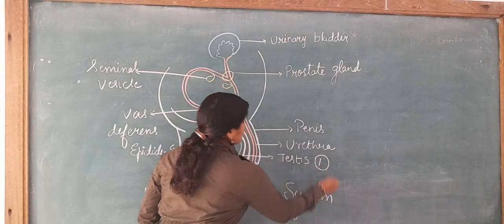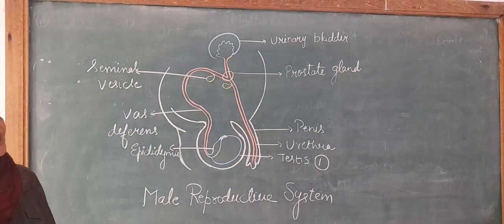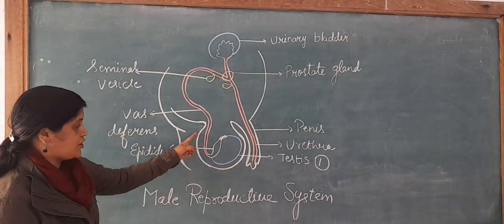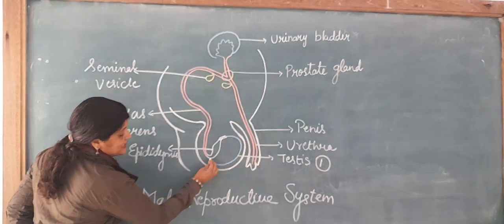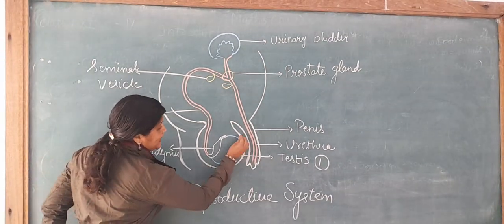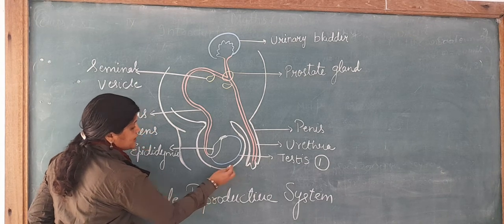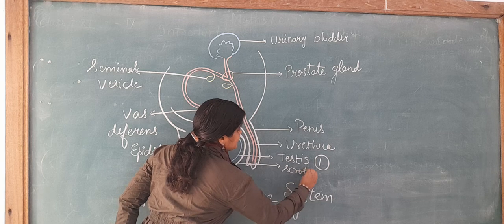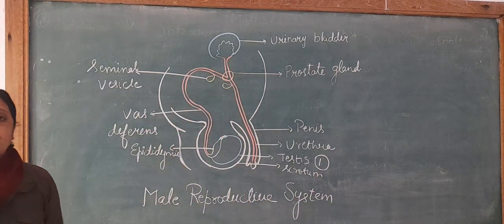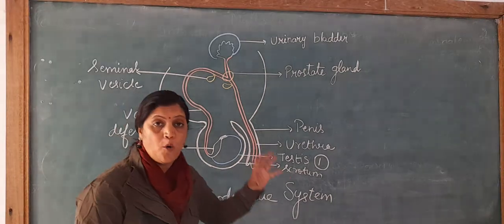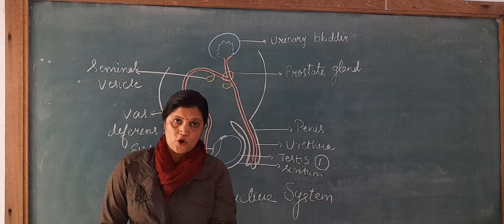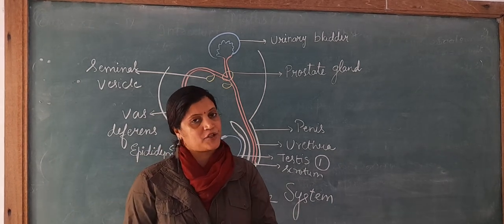The first and very important male reproductive part is the testis. A pair of testis is present, located inside a sac-like structure called the scrotum. The function of the scrotum is to provide optimum temperature to the testis. The testis also releases testosterone hormone, which is responsible for secondary sexual characters.